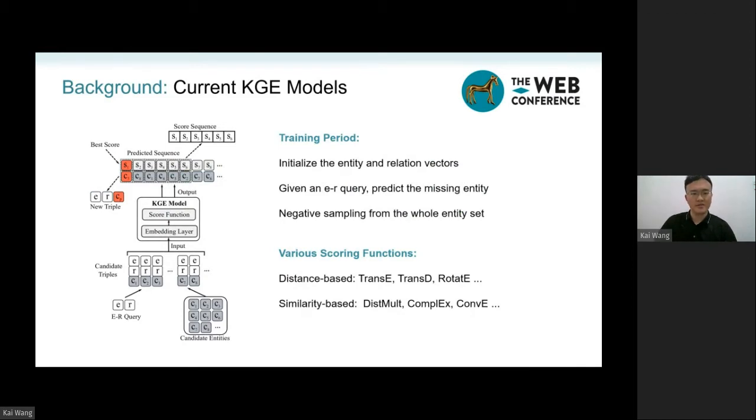The core of a KGE model is the scoring function. A higher score means the triples are more likely to be true. A model usually measures all candidate triples and outputs the best one in the sorted score sequence.